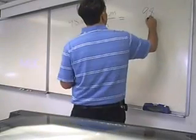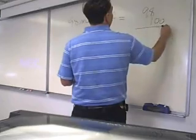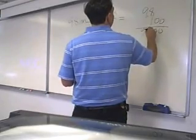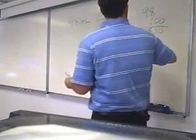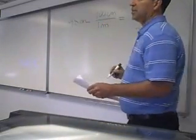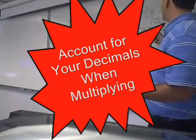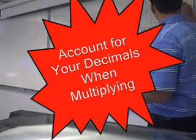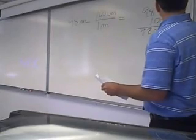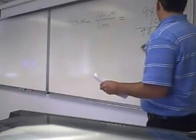So 9.8 times 100 equals 980. The 8, and you have one decimal. When you're multiplying and you have a decimal in your multiplication, at the end you have one decimal here, you have zero decimals here, so you have a total of one decimal — so your answer, you have to move over the decimal.